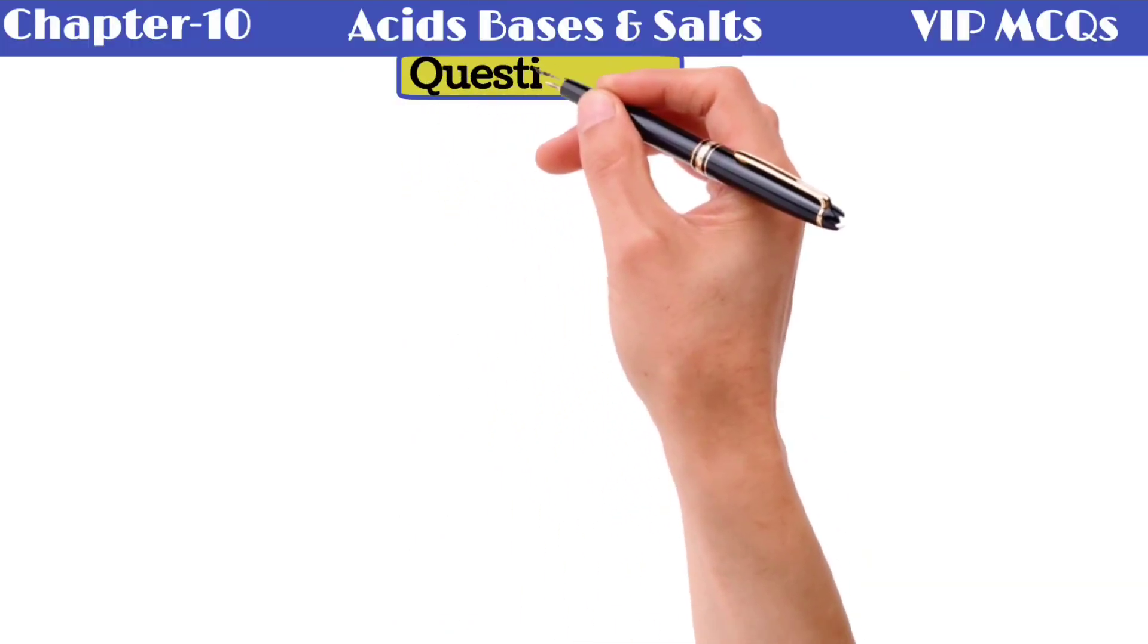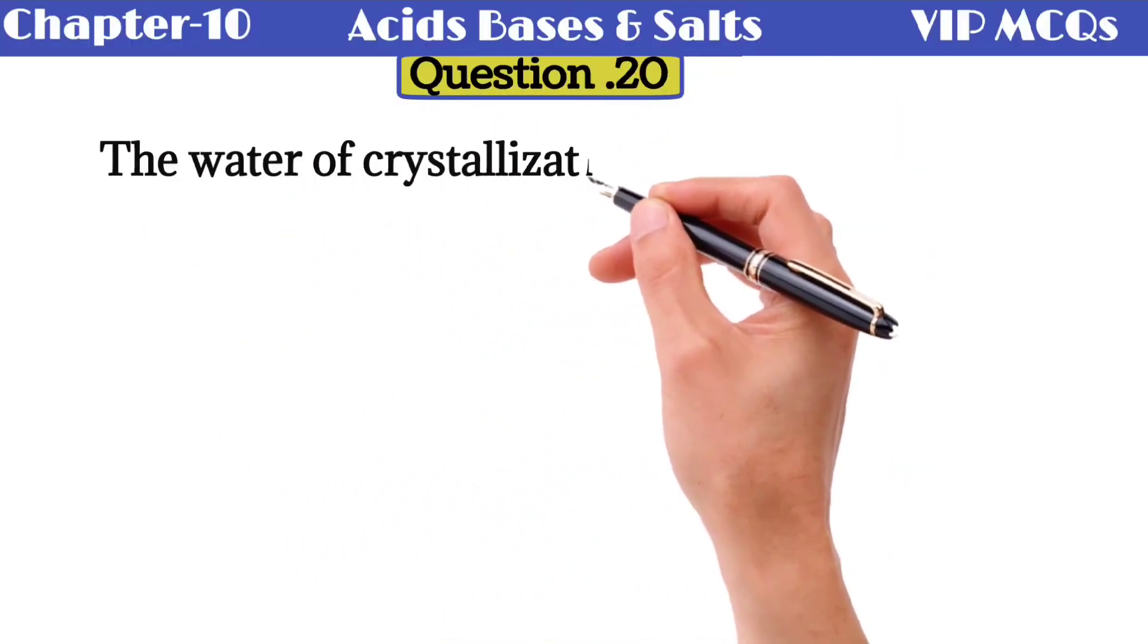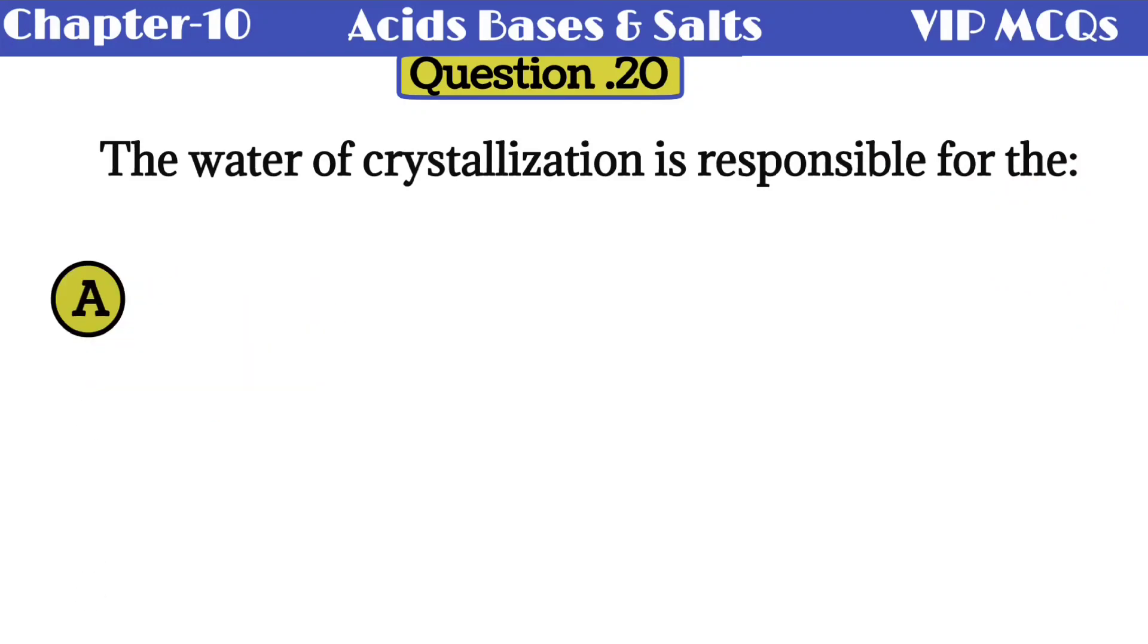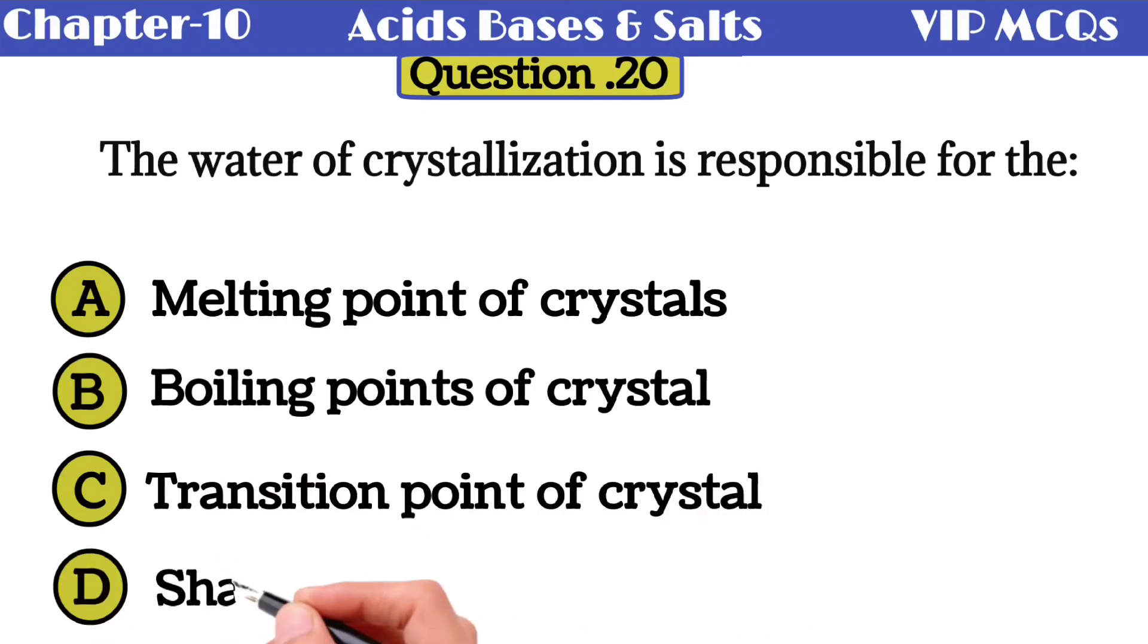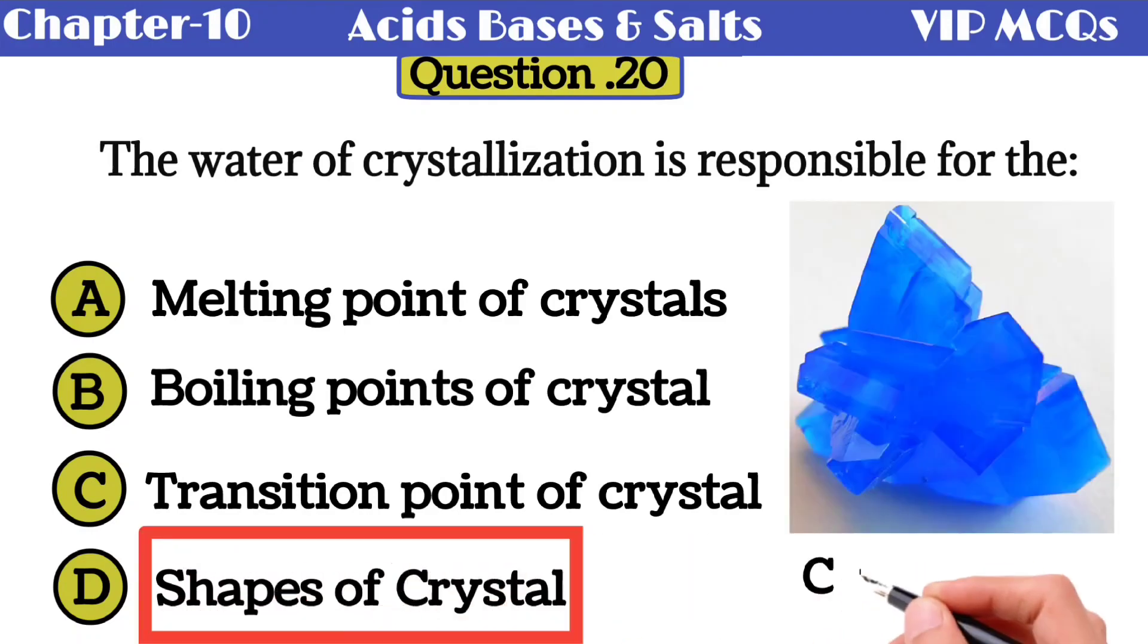Question 20: the water of crystallization is responsible for the - option A melting point of crystals, option B boiling points of crystals, option C transition point of crystals, option D shapes of crystals. The water of crystallization is responsible for the shape of crystal. This is a crystal of copper sulfate, containing 5 water of crystallization.